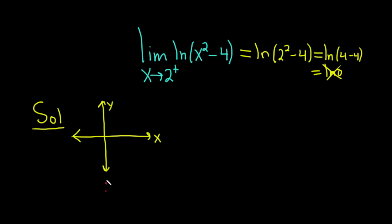The graph of the natural log of x has a vertical asymptote at x equals 0. And I'll draw it in white here. It looks something like this. It crosses the x-axis at 1.